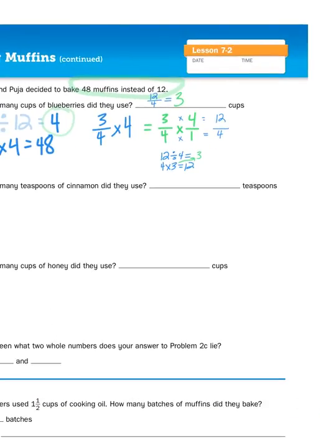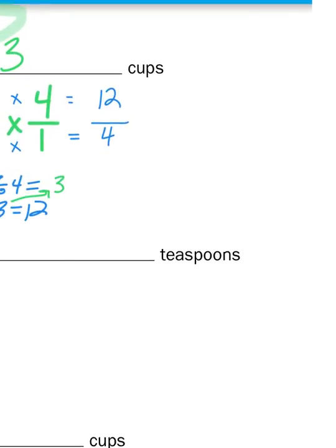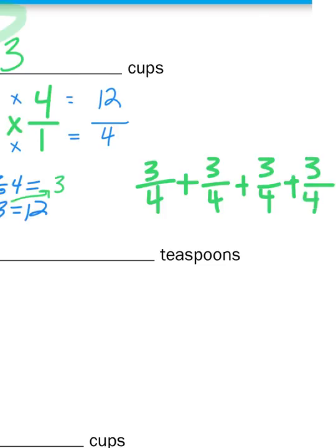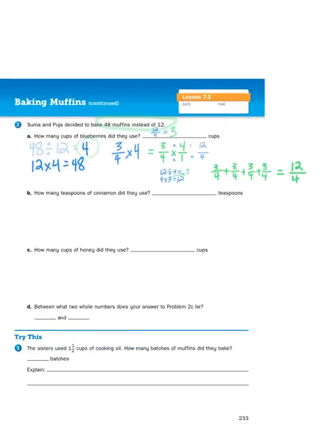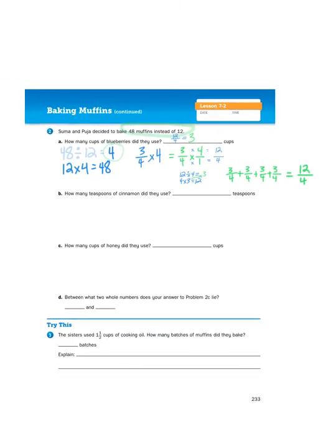Now, again, if you wanted to try that problem doing repeated addition, it would look something like this. I have four groups of three-fourths. So, I'm going to add three-fourths, plus three-fourths, plus three-fourths, and yes, one more, three-fourths. So, again, when I'm adding fractions, I'm only looking at the numerator. So, I'm basically skip counting. Three, six, nine, twelve. And that's how you would solve for the number of blueberries needed for forty-eight muffins.